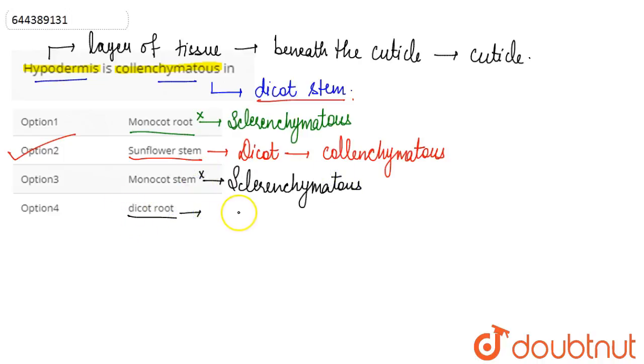Similarly, with dicot root, we also see sclerenchymatous hypodermis. This option is also wrong because collenchymatous hypodermis is a characteristic of dicot stems. In roots, whether monocot or dicot, and even in monocot stems, we see sclerenchymatous hypodermis. The correct answer is option two, sunflower stem, because it is a dicot stem and bears collenchymatous hypodermis.